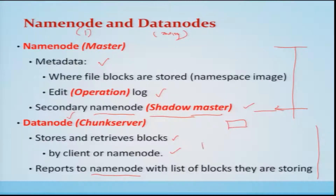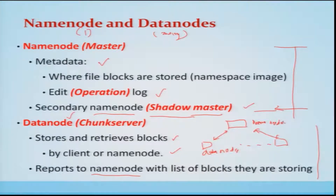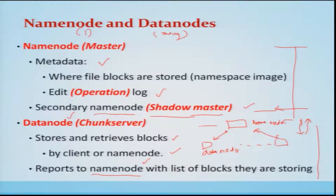The DataNodes, which are many in number, report to the NameNode using heartbeats. They report a list of blocks they are storing. Whenever a request comes from the client to store data through the NameNode, the DataNodes store the data and report this information back to the NameNode so that the metadata can be updated.